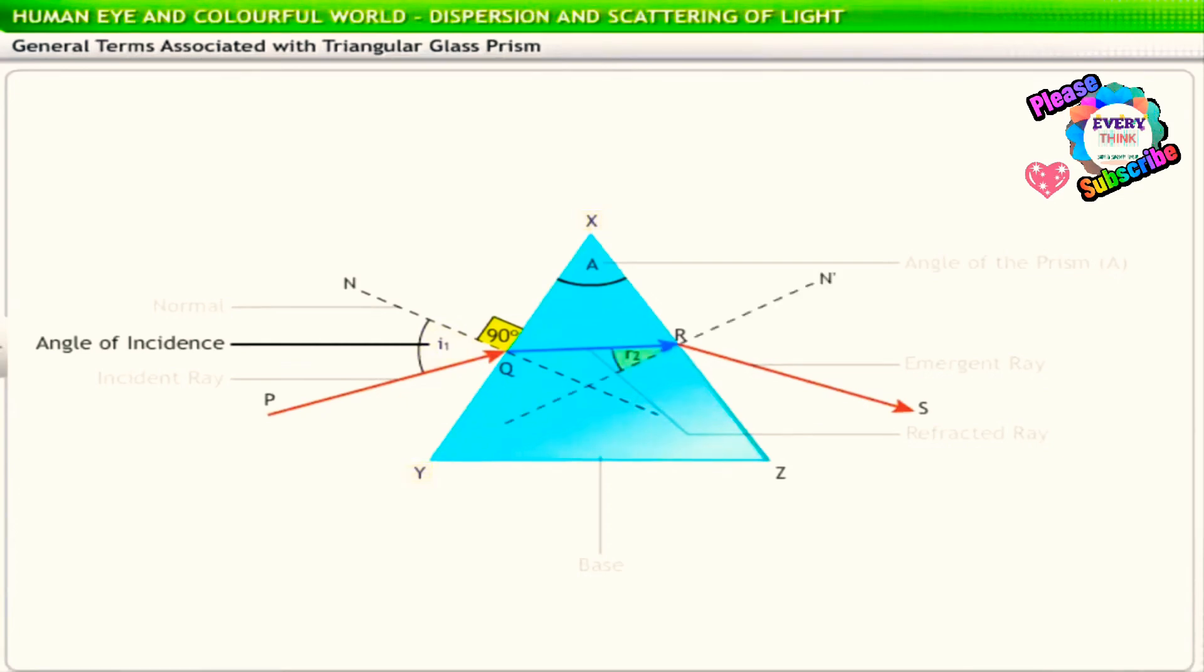Similarly, angle R2 is the angle of incidence on the face represented by XZ. The angle between the normal and the refracted ray is known as the angle of refraction.